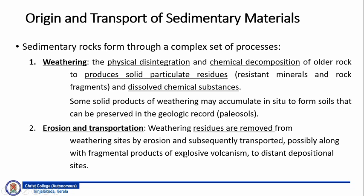When a rock undergoes weathering, it produces two types of things: one is solid particulate residue and the second one is dissolved chemical substances. Some solid products of weathering may accumulate in situ — which is the place of its origin — to form soils and can be preserved in the geological record as paleosols. Paleosols are nothing but the soils that developed in the past.